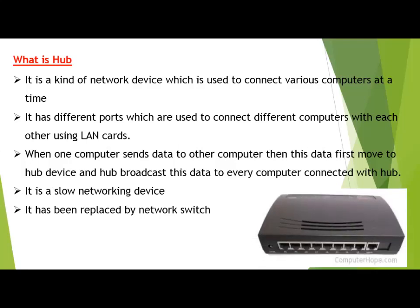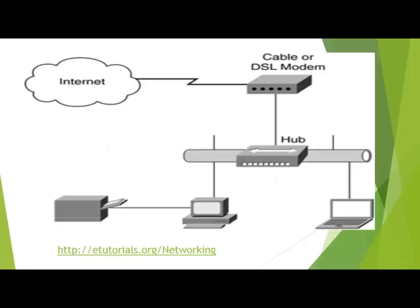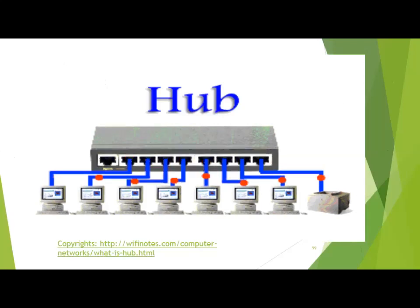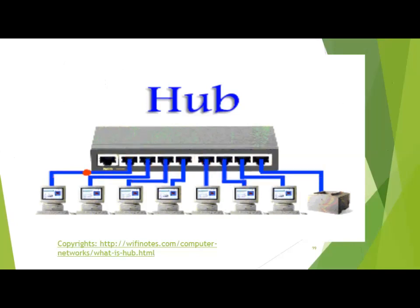Here you can see the hub and how it is connected with different computers. If you want to use resource sharing in a better way you need a hub. Multiple computers can connect with each other using hardware or software resources. Here you can see the working of a hub — when one PC sends data, all computers receive it, which is why it becomes slow and there is a collision.